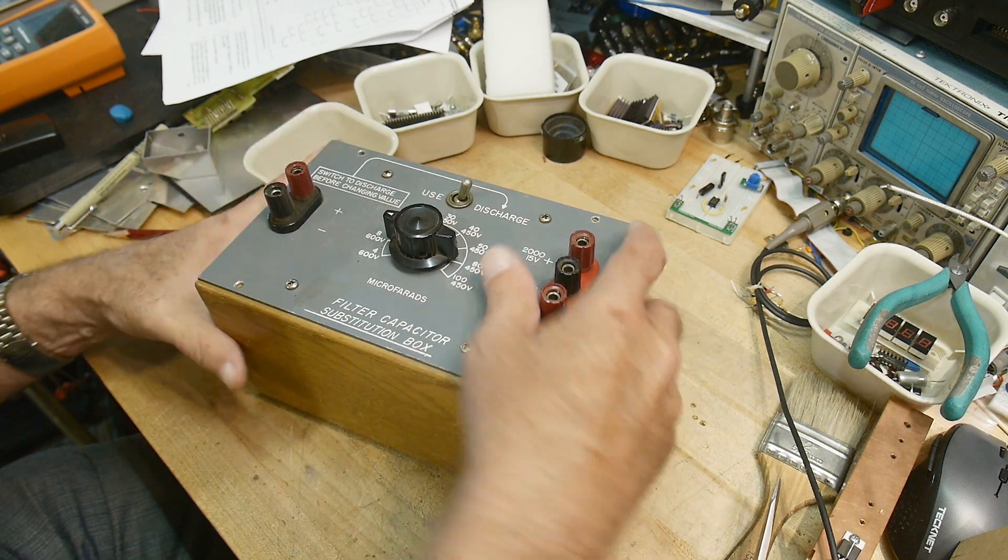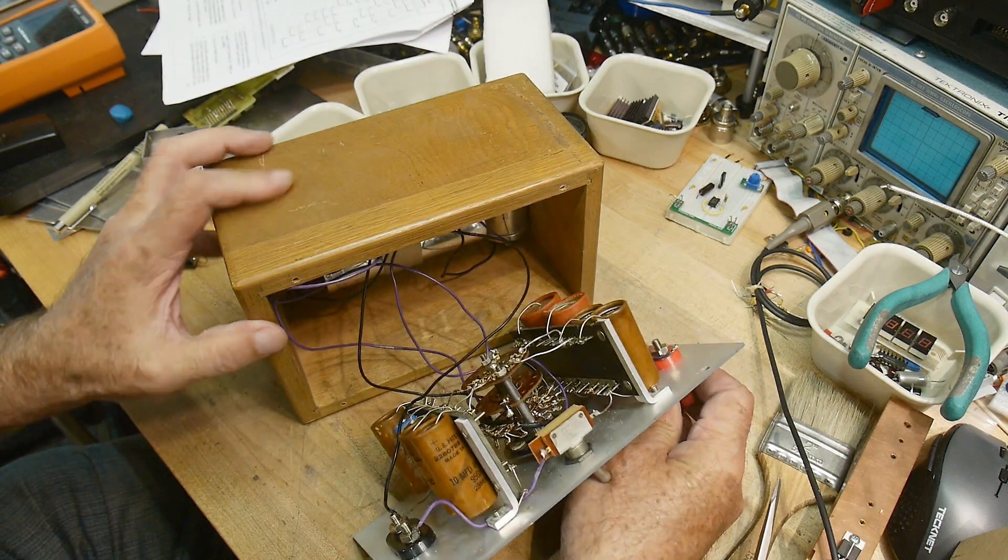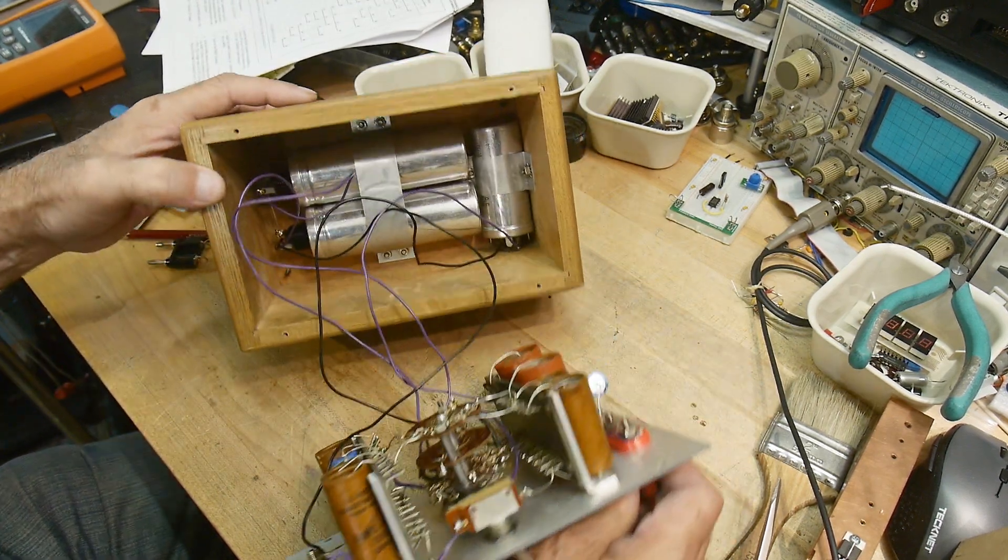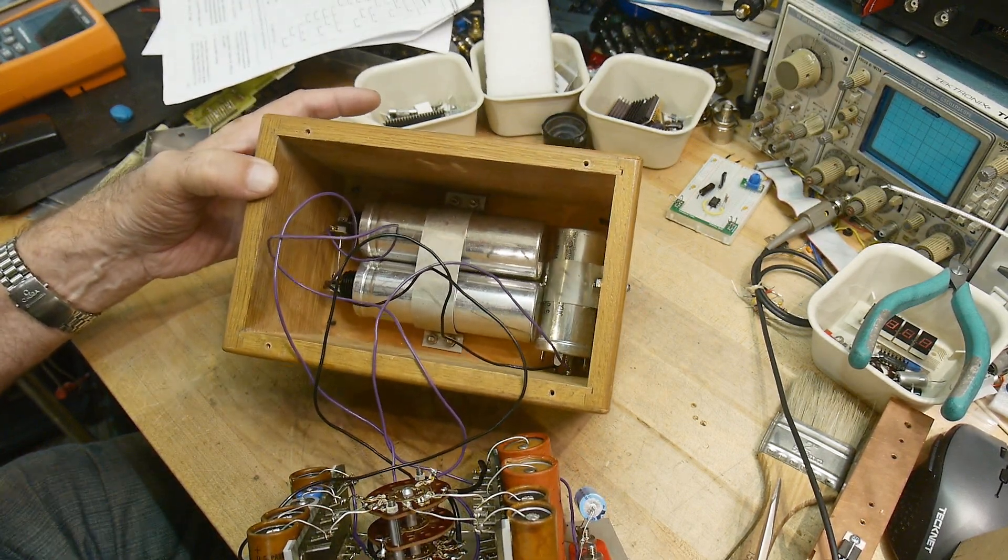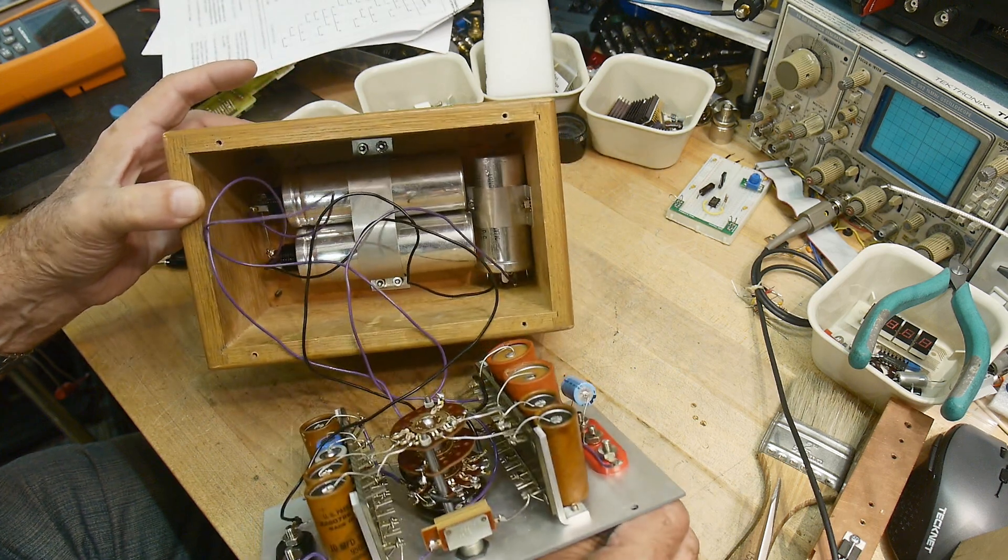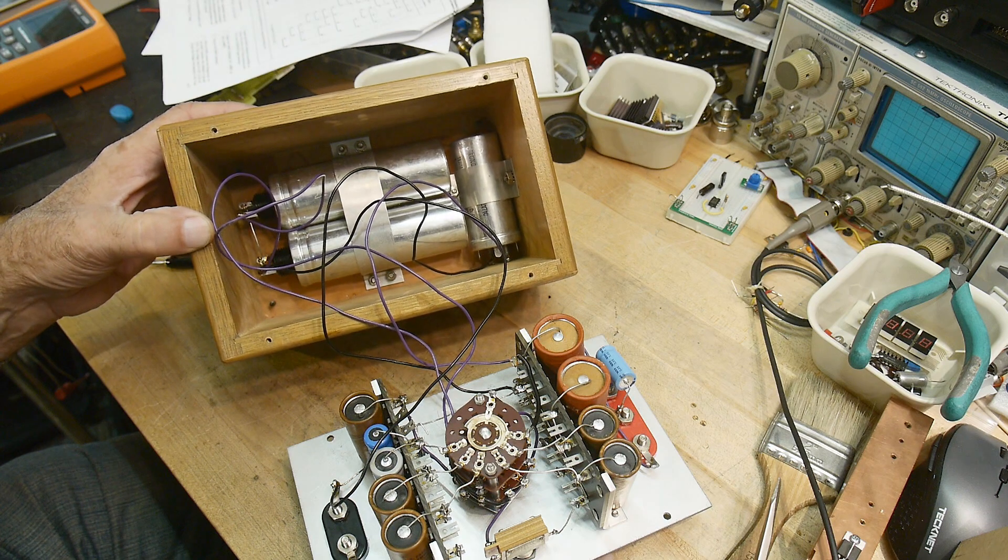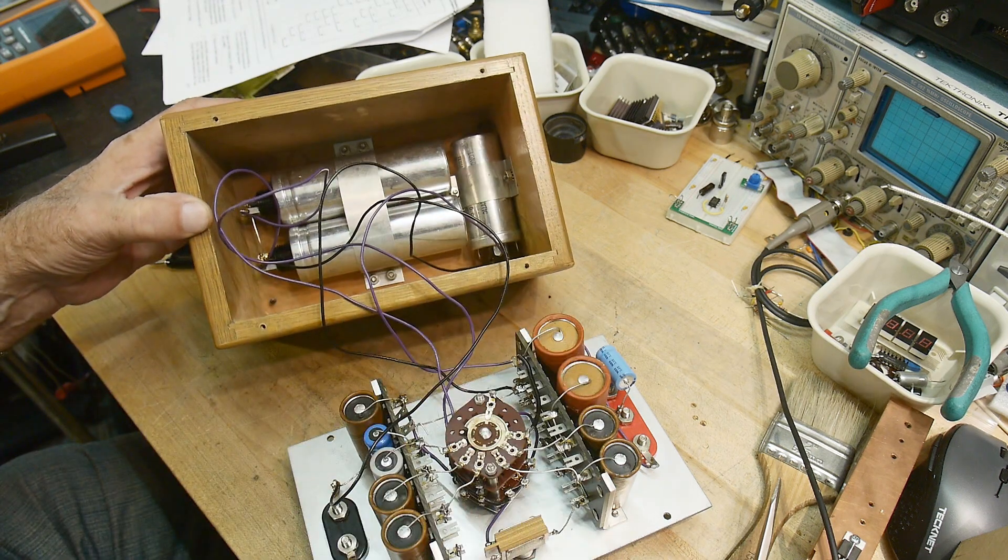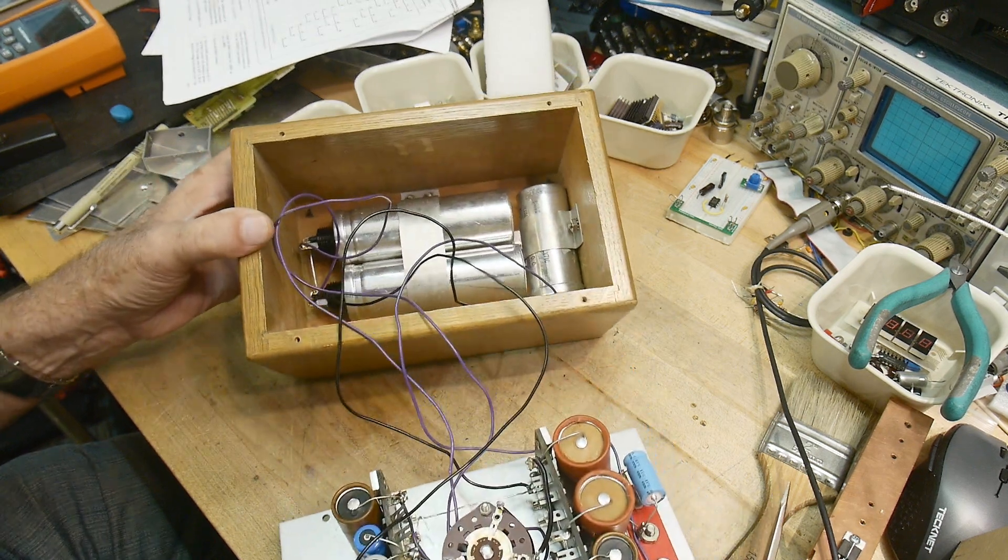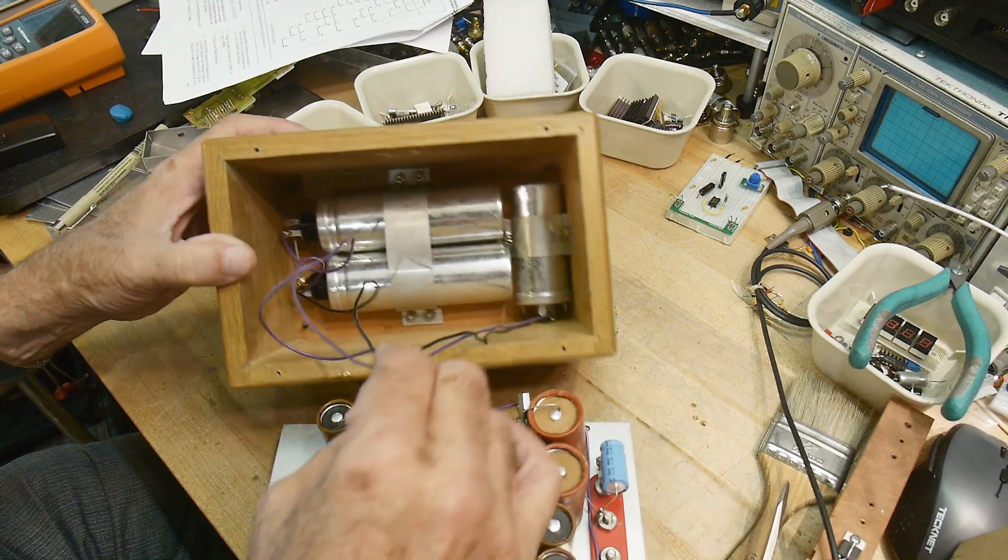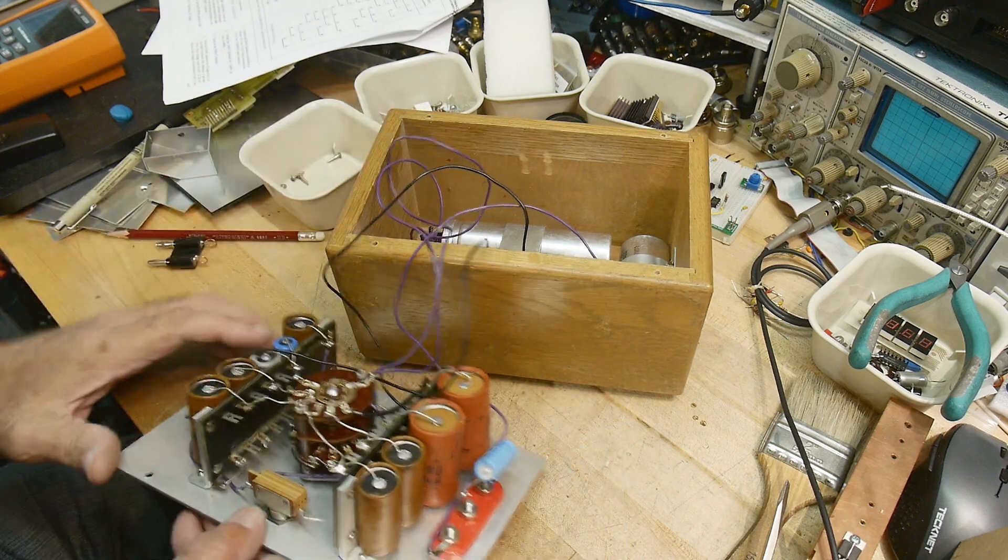Are you ready for the big reveal? Oh, what is inside this thing? Look at that, some big caps down there. This is for designing radios or troubleshooting radios, right? You got these big high voltage, fairly low capacitance type stuff. You can imagine those in radios.